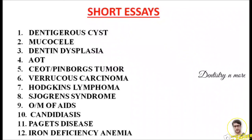The twelfth important question is iron deficiency anemia. From the blood chapter, sickle cell anemia, pernicious anemia, and iron deficiency anemia are all very important. These can be asked as long essays or short essays, so you must be thorough with all of them.